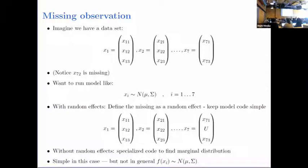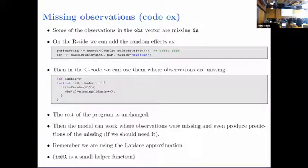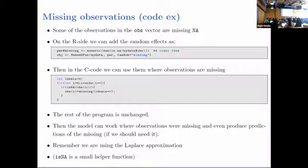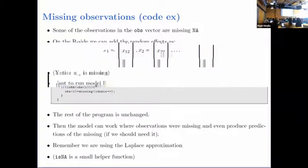If the scenario were more complicated, finding the marginal distribution analytically would be very hard. Without random effects you need to do a lot of work; with random effects you really don't need to do anything. This is actually code from SAM: you count how many observations are missing, make a vector of missing values, and run through your observations — if there's an NA, you put in the missing value. After that, you don't need to worry about missing observations at all.